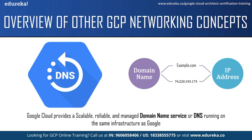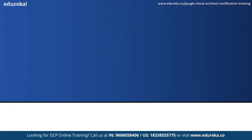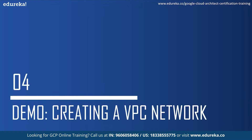Cloud DNS is a high-performance, resilient, global DNS service that publishes your domain name to the global DNS in a cost-effective way. Cloud DNS lets you publish your zones and records in DNS without the burden of managing your own DNS servers and software. Cloud DNS offers both public zones and private managed DNS zones. A public zone is visible to the public internet while a private zone is visible only from one or more virtual private cloud networks that you specify. Now let us move on to the demo part where I will show you how to create a VPC network in Google Cloud.